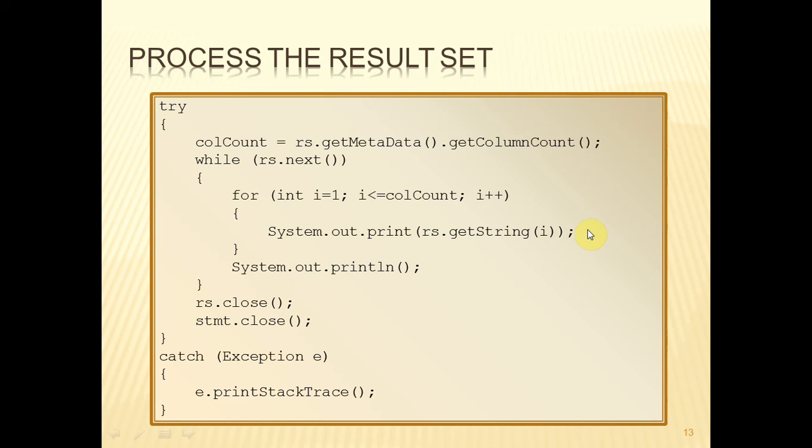On the other hand, if we do know what the column names are in the result set, then instead of using getString I, we could use getString and then instead of I, we'd put a double quote, the name of the column, double quote. And so we're then extracting the data by column name instead of by index. And in this very simple example, we're just getting that string and immediately printing it out to the default output stream.